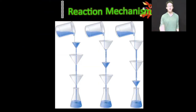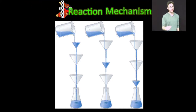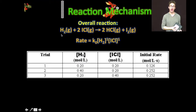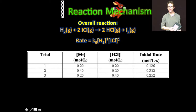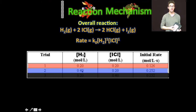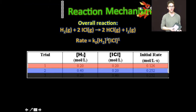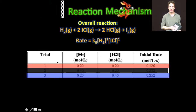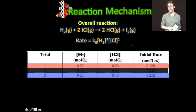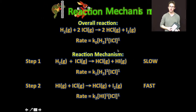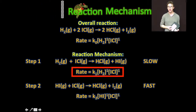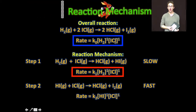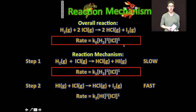The overall reaction can only go as fast as the slowest step. Coming back to the reaction between hydrogen and ICl — given the overall reaction, I look at experimental data to determine the orders with respect to the reactants. As I compare trials one and two, the concentration of hydrogen doubles while ICl remains constant and the initial rate doubles, indicating first order with respect to hydrogen. Comparing trials one and three, the concentration of ICl doubles while hydrogen is held constant and the rate doubles, indicating first order with respect to ICl. The rate law for the slow step is consistent with the rate law for the overall reaction — they match because it's the slow step that determines the rate.